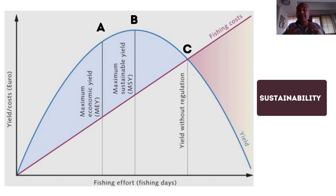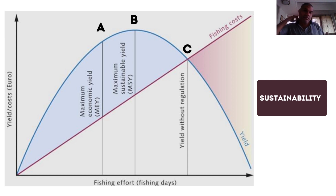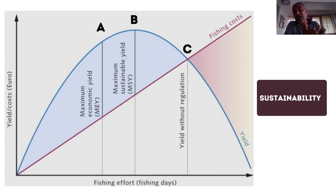Then there is point B, the maximum sustainable yield. If from a school of 100 fish we capture 45 to 50, when we come back the next time we might find they have just about recovered to around 100 fish. After this point the fishing becomes unsustainable. If we capture 70 or 80 from 100, the next time we come back we find fish populations have reduced to only 50 to 60. Our second capture of 50 to 60 then leaves behind only 10.